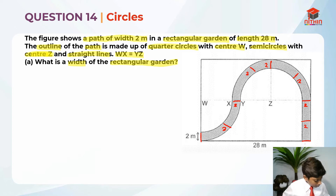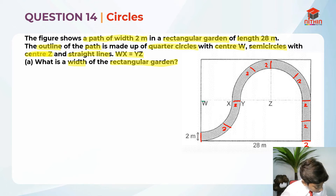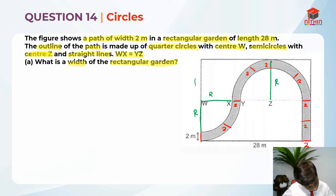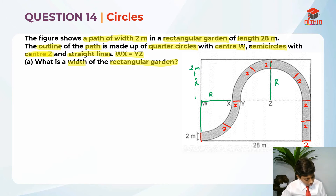We need to find the radius in order to find the width of the rectangular garden. Because this radius over here — I'm using a green color so it's easier to see — this radius is equal to this radius over here, and the radius is also over here. Here it is 2 meters. So there is basically one radius, 2 meters, and there's another radius here plus 2 meters. We need to find the radius.